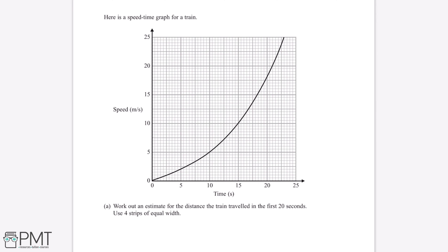Here is a speed-time graph for a train. Work out an estimate for the distance the train travelled in the first 20 seconds, using four strips of equal width. Because this is a speed-time graph, the distance travelled is equal to the area under the graph. So we want to estimate the area under the graph between the times of 0 seconds and 20 seconds.